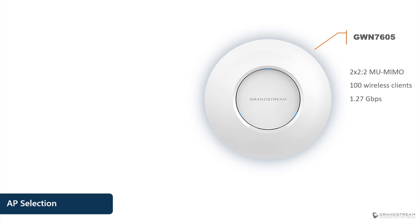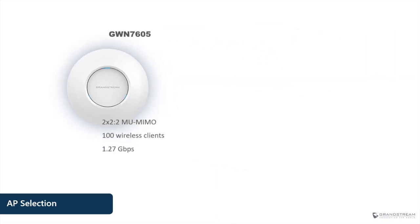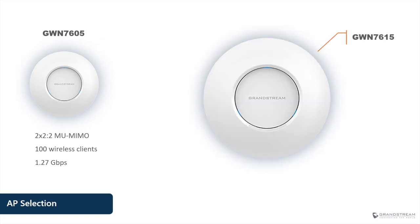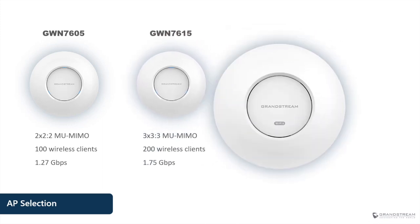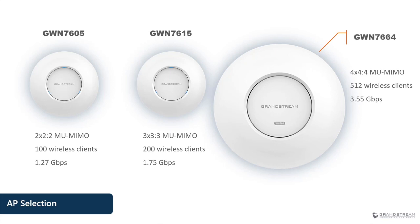Starting with low density access points, there is the GWN 7605, which offers two spatial streams with multi-user MIMO technology and supports up to 100 concurrent clients with an aggregate wireless throughput of 1.27 Gbps. Next, the GWN 7615 for medium density includes three spatial streams, supports up to 200 wireless clients, and delivers 1.75 Gbps. For high user density environments, the Wi-Fi 6 capable GWN 7664 offers four spatial streams, an aggregate throughput of 3.55 Gbps, and can handle up to 512 concurrent clients.